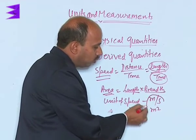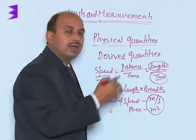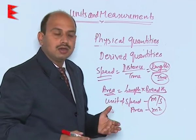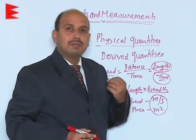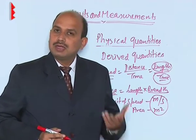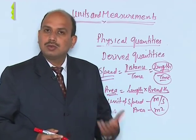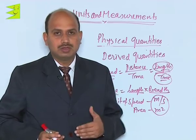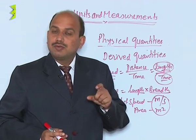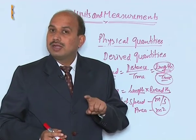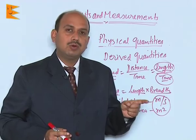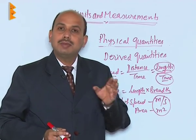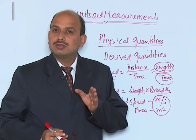These units are known as derived units. When we divide or multiply two or more fundamental quantities or units, we get derived quantities or derived units. But take care — if you are adding two quantities, you cannot get another quantity, because only two quantities having the same units can be added or subtracted.